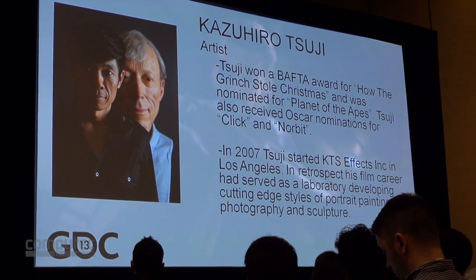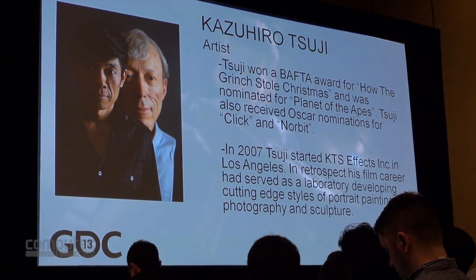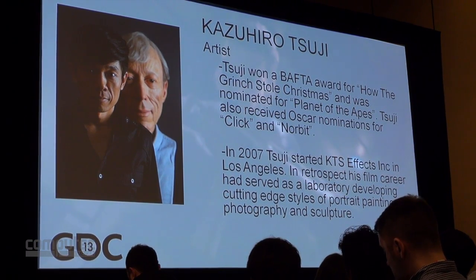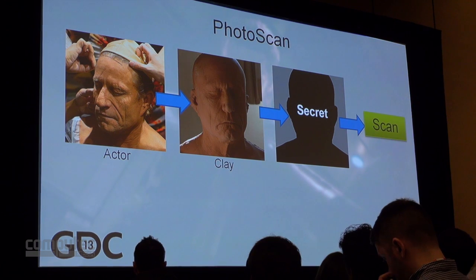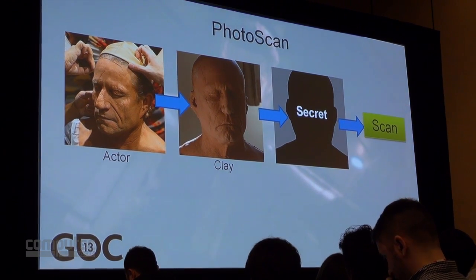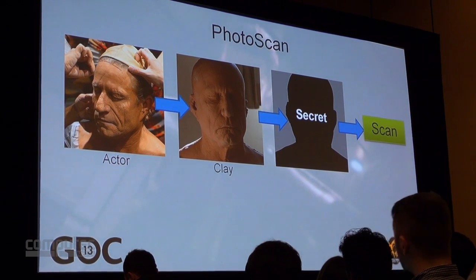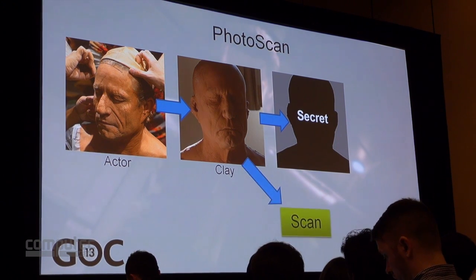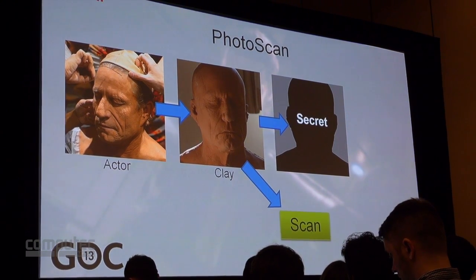The person who requested to do the sculpting was Mr. Kazuhiro Tsuji. He is famous in the field of photoreal sculpting and has worked on many projects including The Curious Case of Benjamin Button and Looper. Unfortunately, we are unable to show you what the finished character looks like. We can, however, show you the scan of the clay model before the addition of the special effects makeup.